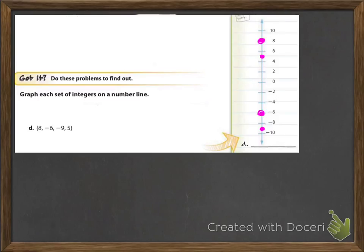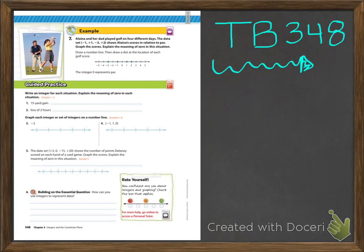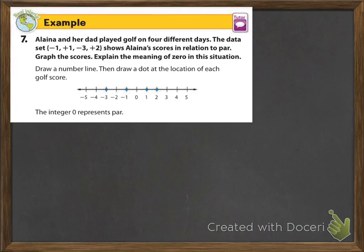Now we're looking at textbook page 348. As promised when we scanned the lesson, we said we're going to learn about golf scores. Elena and her dad played golf on 4 different days. The data set — negative 1, positive 1, negative 3, and positive 2 — shows Elena's score in relation to par. Graph the scores and explain the meaning of 0 in this situation.